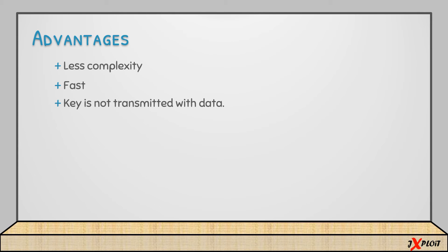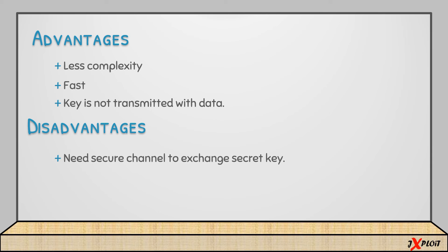The third advantage is that the secret key is not transmitted along with the ciphertext — the key is shared separately between the sender and receiver, which adds to the security of symmetric key cryptography. Now let's look at some of the disadvantages. The first disadvantage is that it needs a secure channel to share the secret key. If the channel is not secure, there is a high chance the secret key may get exposed.